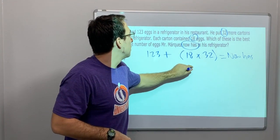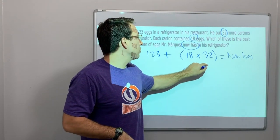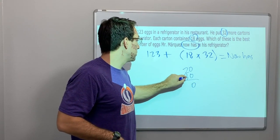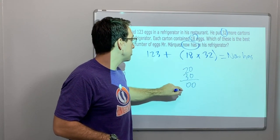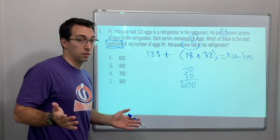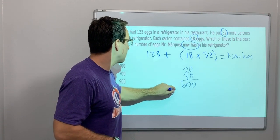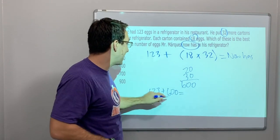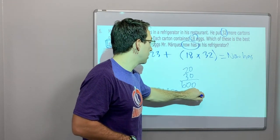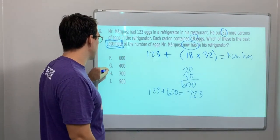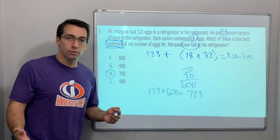So let's just estimate. What is 20? 18 rounds to 20 times 30. Well, that is 0. 3 times 0 is 0, 3 times 2 is 6. 600. So what is 123 plus 600 equals 723? See how we did that? See how we estimate?